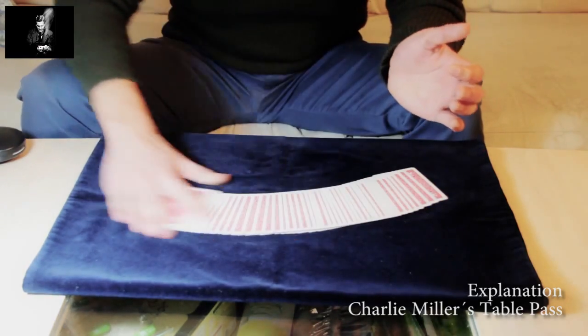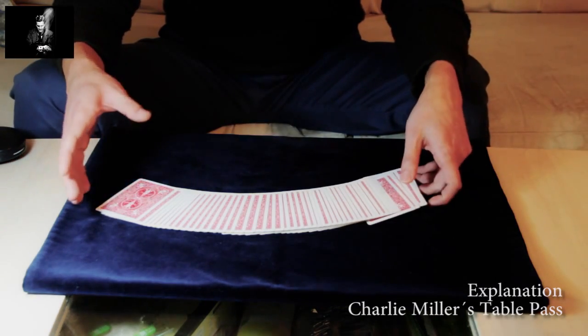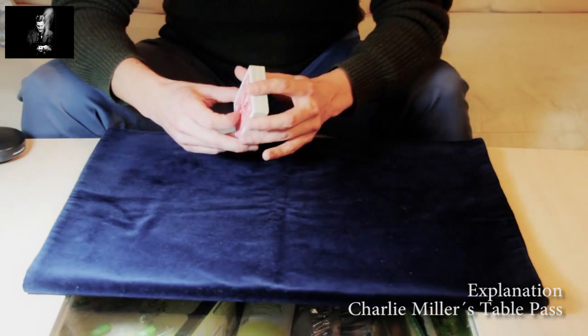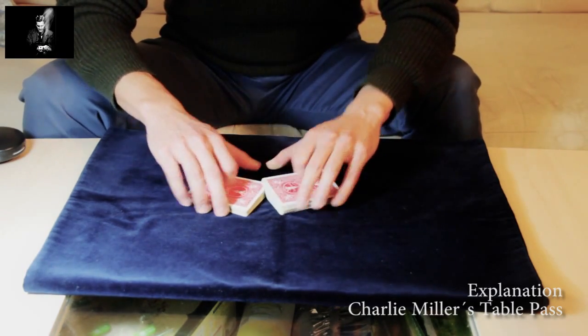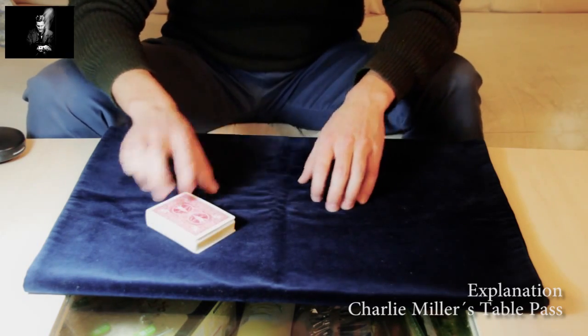Alright, so this is called Charlie Miller's Table Pass, also called Miller's Table Pass. You can read it—it is explained in Vernon's Ultimate Secret of Card Magic, I think it goes to page 94. Have fun with it. Bye-bye.